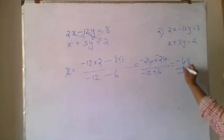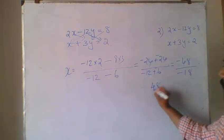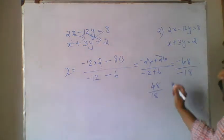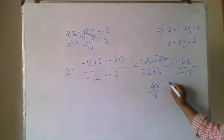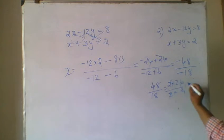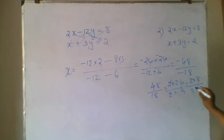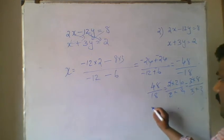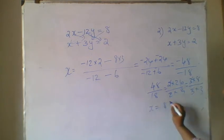The minus minus will cancel, then 48 divided by 18, so 48. Then we can cancel, then we can say that x is equal to 8 by 3.